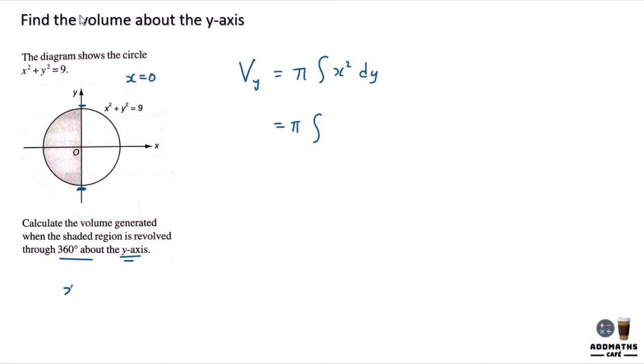So first, let's find the y-intercept. So let's make x equal to 0. I know that my y squared equal to 9. y will be equal to plus 3 and negative 3. So this part will be negative 3, this part will be positive 3.